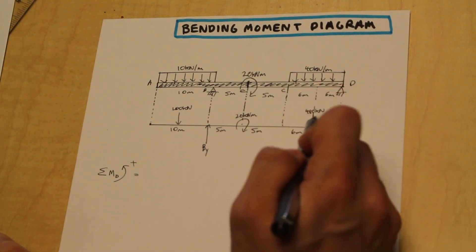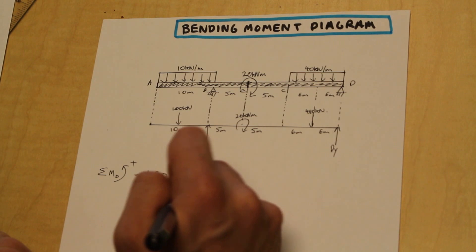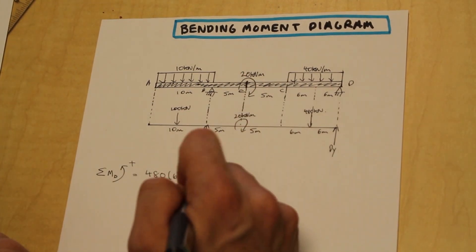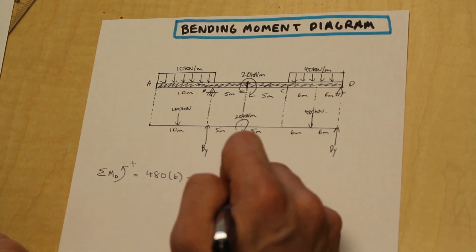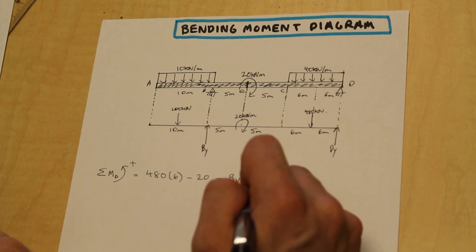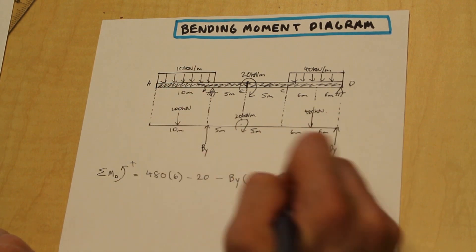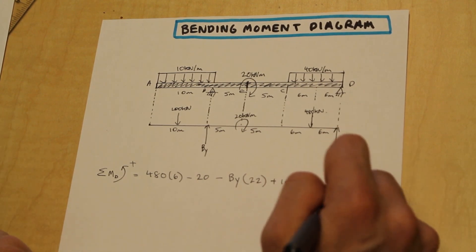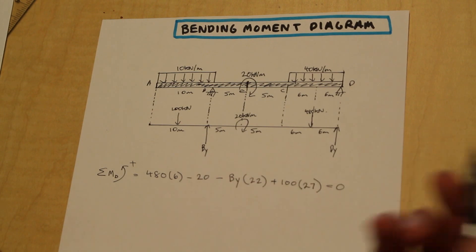We have 480 kN acting 6 meters to the left of DY, and that's positive. We have a free moment, which is negative, and there's no distance there. A free moment acts anywhere on the beam, so we can subtract that straight up. We have a negative moment, BY. It's going clockwise, and that is 22 meters away. Finally, we have that 100 kN singular force here, that's positive, and that is 27 meters from DY. That's equal to zero because the sum of the moments equals zero; the beam is in equilibrium. All we have to do is solve for BY.